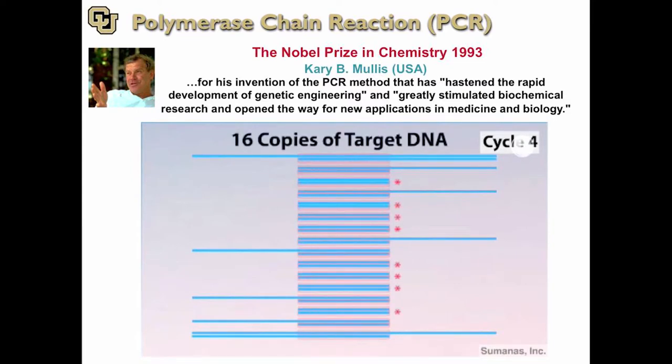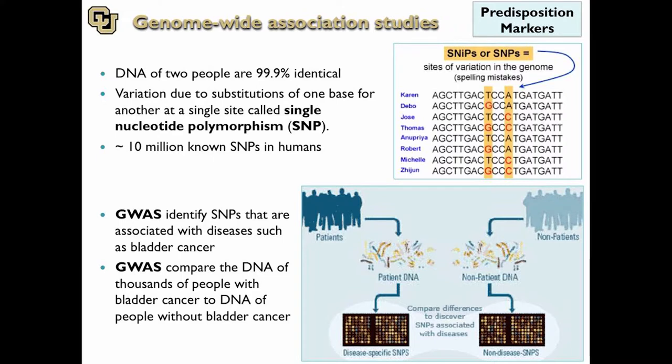Essentially, what this technology does is amplify pieces of DNA. Without this, we would not have been able to do whole genome sequencing — we would not be able to sequence a human cancer for $2,000 in 2017. It's really fundamental. PCR can amplify both DNA and RNA. All the tests that look at mutations in the urine rely on PCR to amplify and detect those mutations — otherwise you couldn't detect them with raw DNA alone. The other thing we look at is SNPs — single nucleotide polymorphisms — and these are predisposition markers.